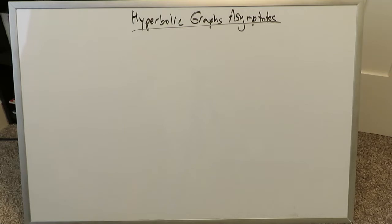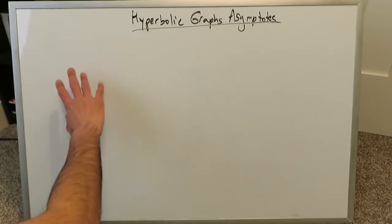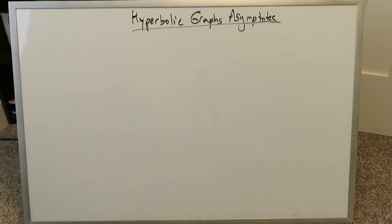In terms of asymptotes, we have oblique asymptotes, we have vertical asymptotes, and horizontal asymptotes. None of these graphs have any oblique asymptotes. The only things which may come about are either vertical or horizontal asymptotes, and we have to see how they come about.